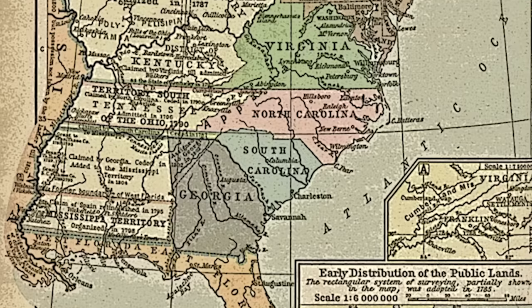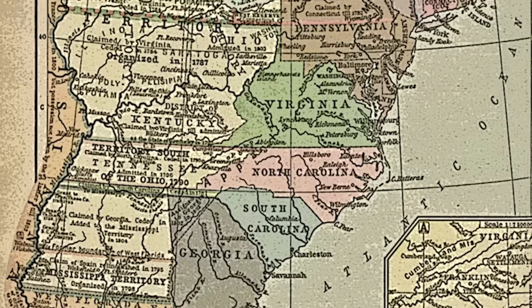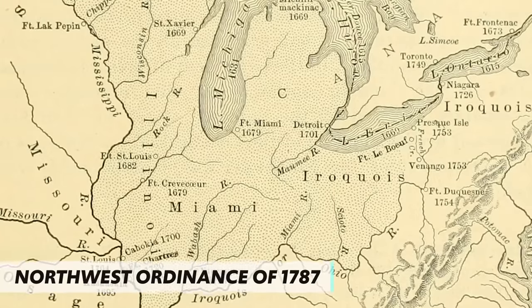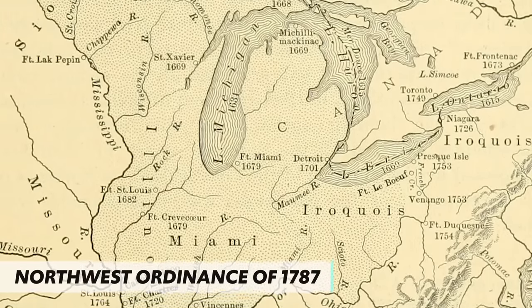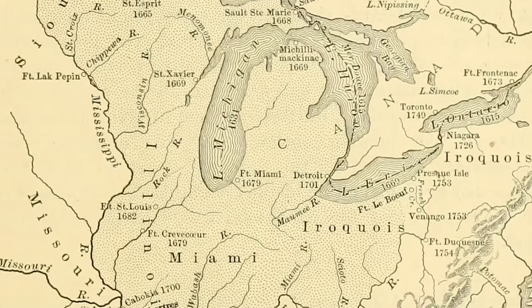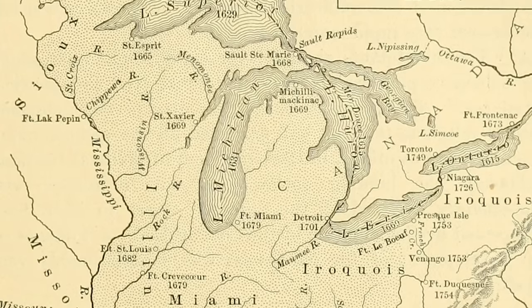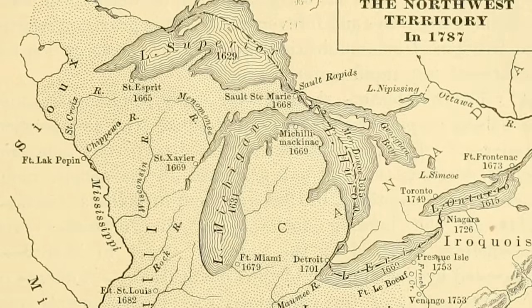One of the more immediate problems was westward migration. Warfare between settlers and Indians continued, and many people were squatting on land without legal ownership. So Congress passed the Northwest Ordinance of 1787 — arguably the best thing the federal government did under the Articles. It accomplished two important things: first, it provided a plan for how unformed territories could be occupied and then apply to the Union for statehood; and second, it abolished slavery in the Northwest Territory.